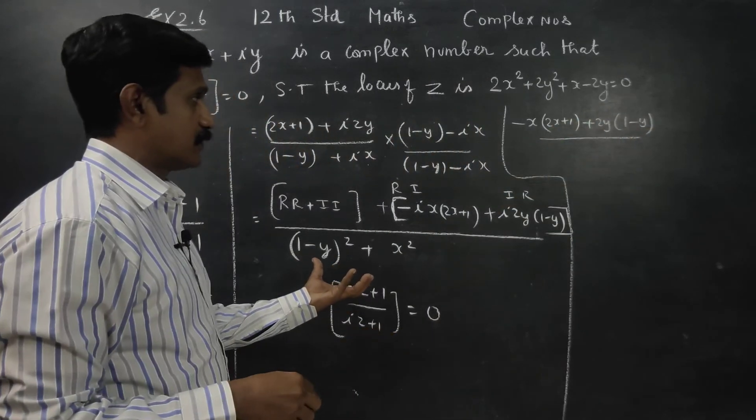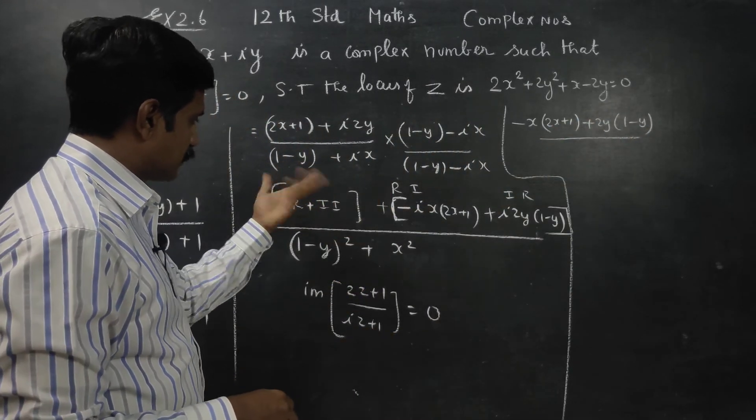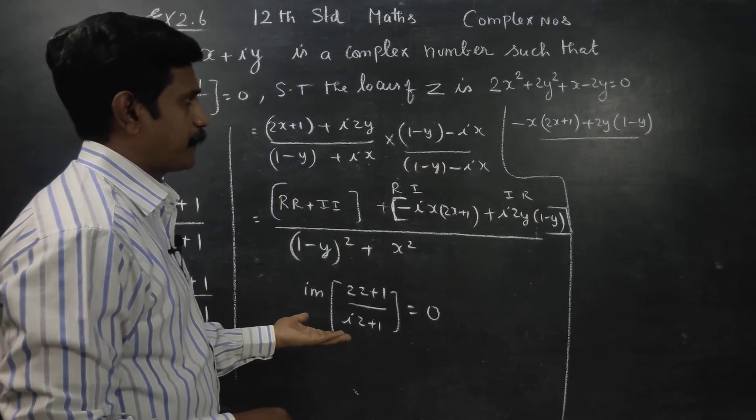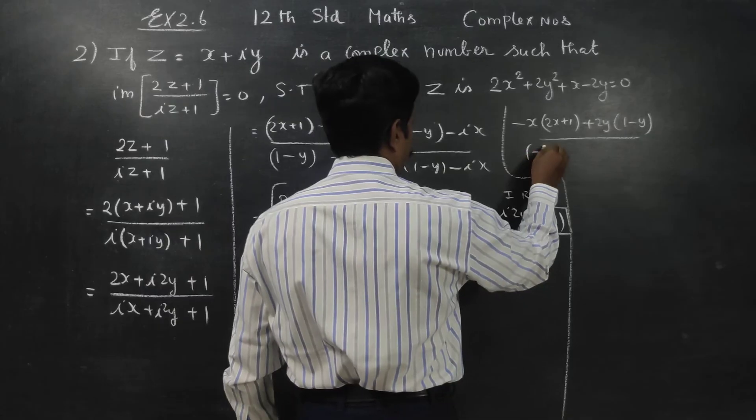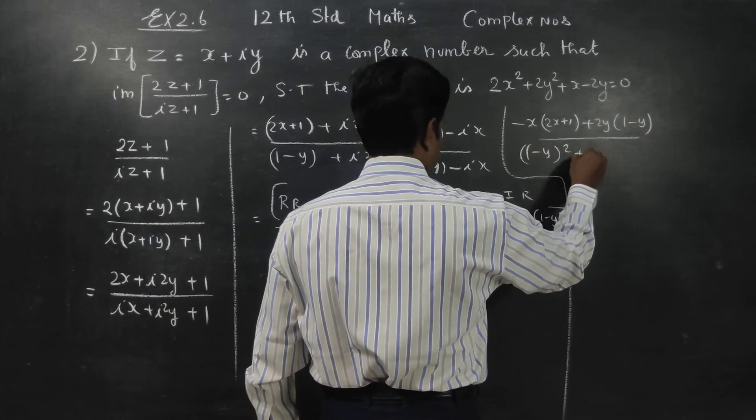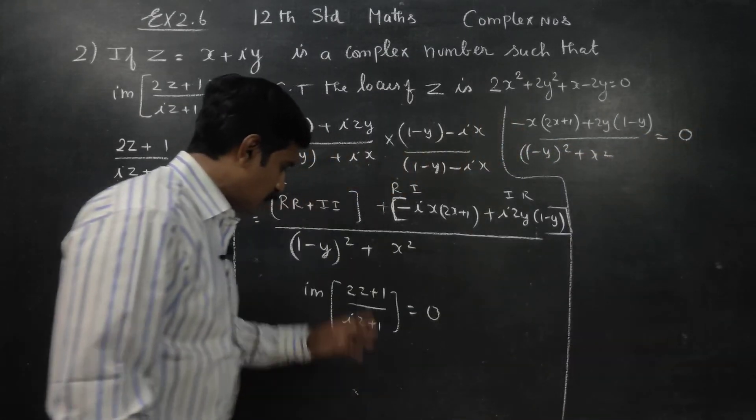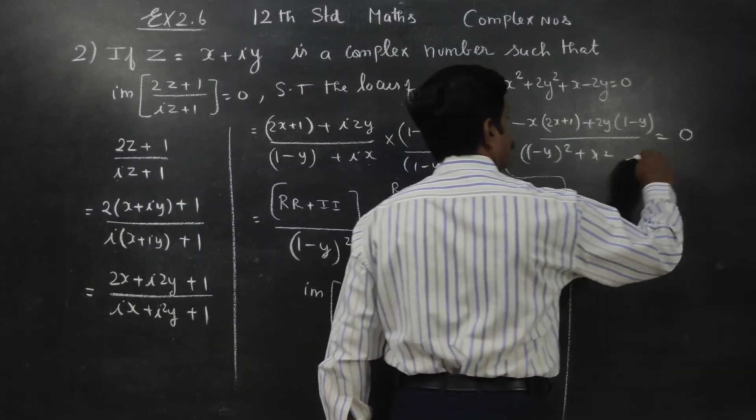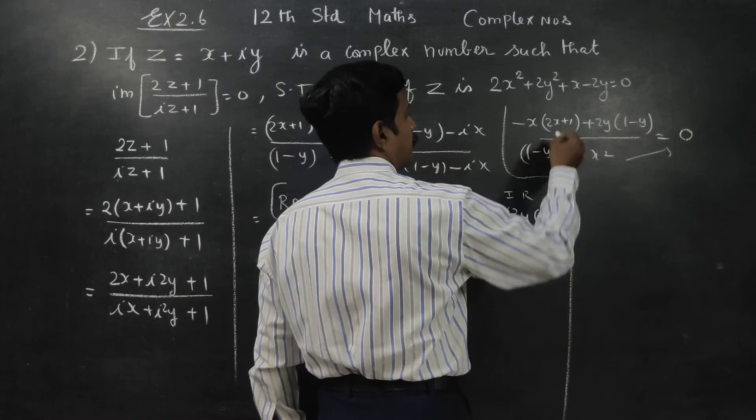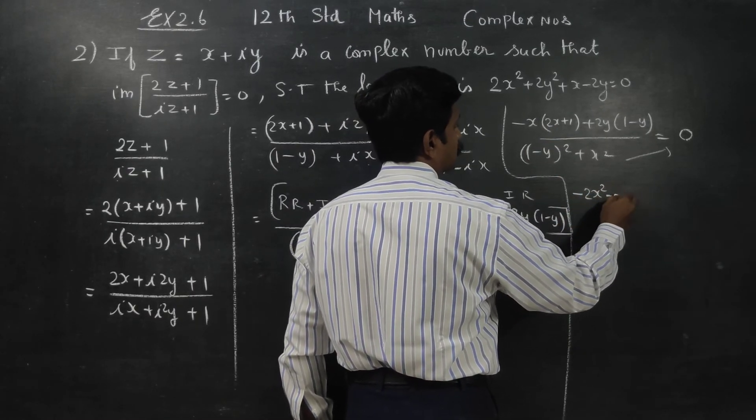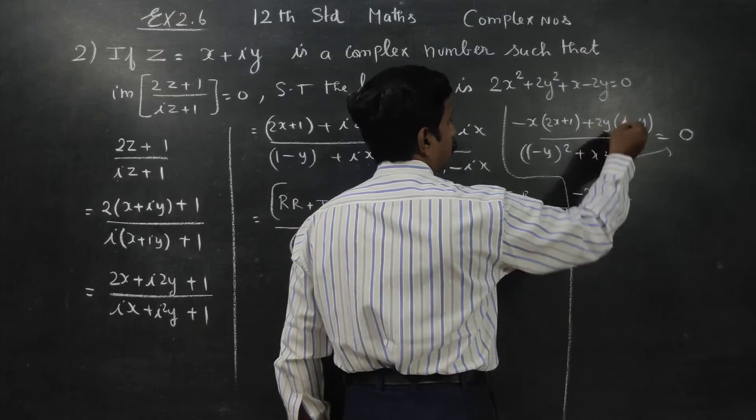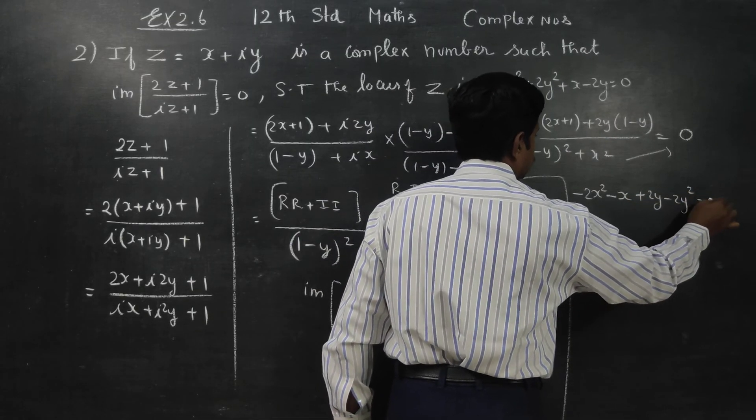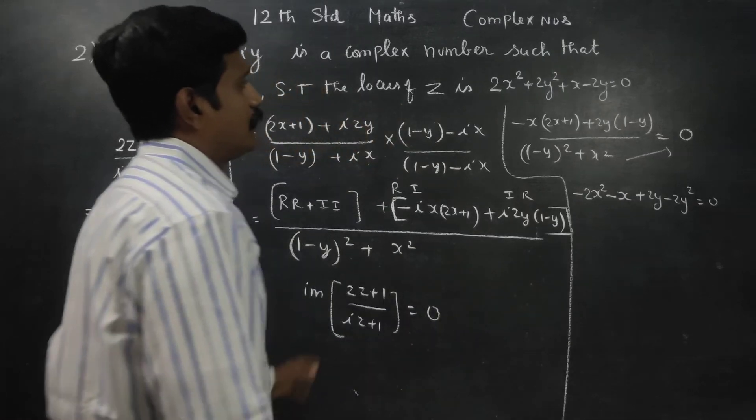Imaginary is 0, cross multiply. minus x minus 2x square minus x plus 2y minus 2y square is equal to 0.